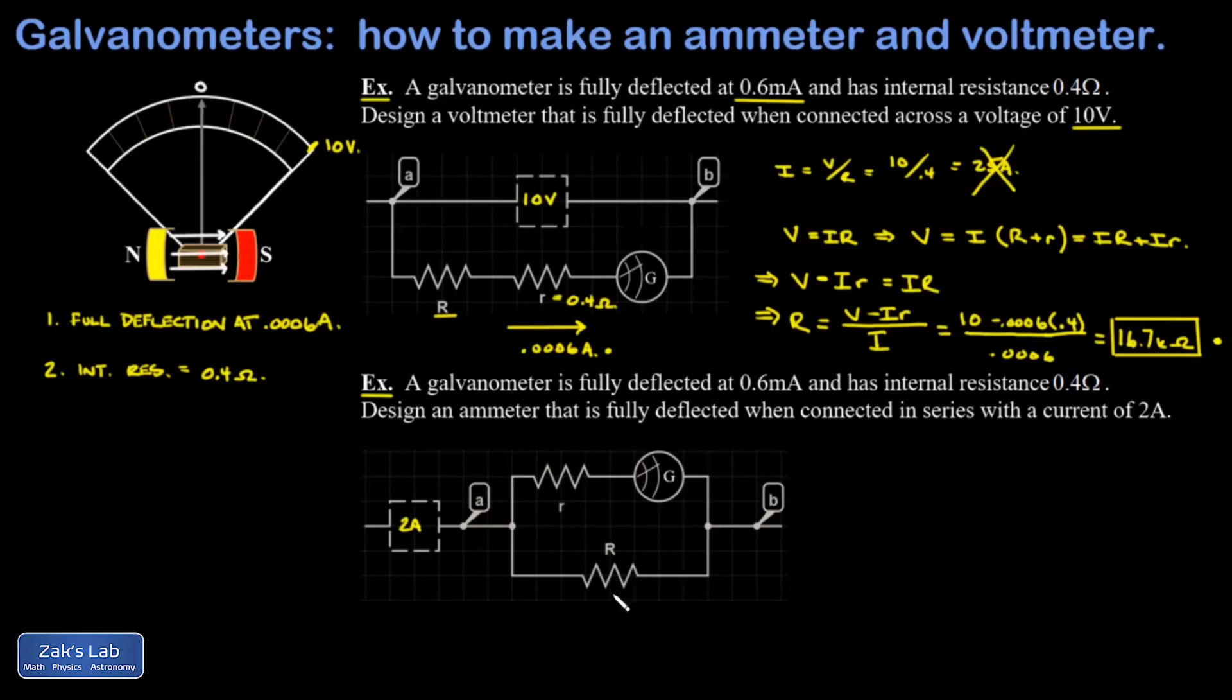So what I do is put a resistor in parallel with the galvanometer branch, and that resistance should be very small so the vast majority of current goes that way, and then I end up with 0.0006 amps going through the galvanometer branch when there's two amps flowing through the ammeter.